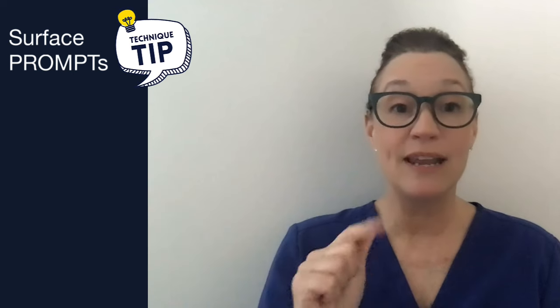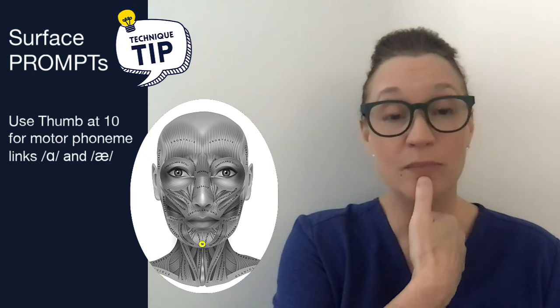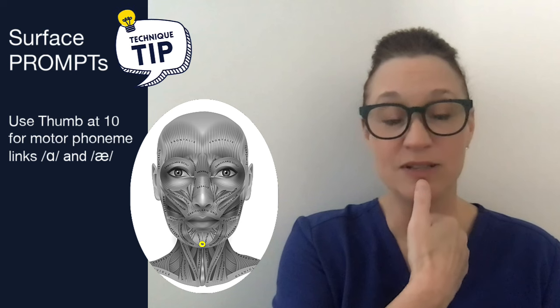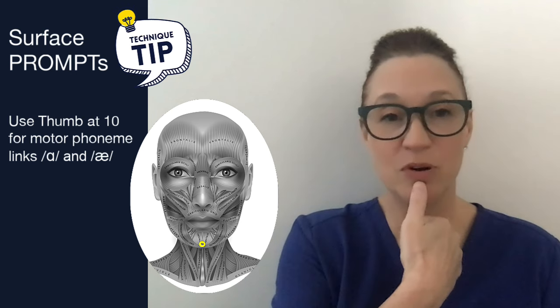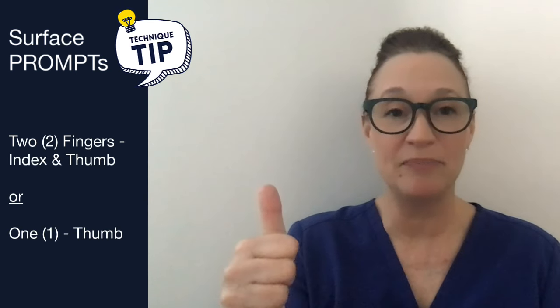Now, what if you are surface prompting 'ah'? Here, you're just going to use one finger — your thumb — and you're going to be at point 10, at that lower medial 1-3 portion of the mandible. So for surface prompts, the answer is either two fingers or one.